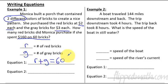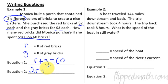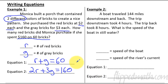The second equation uses the money: two dollars per red brick plus three dollars per gray brick equals $160 total. So: 2r plus 3g equals 160. That gives us our two equations for the system.